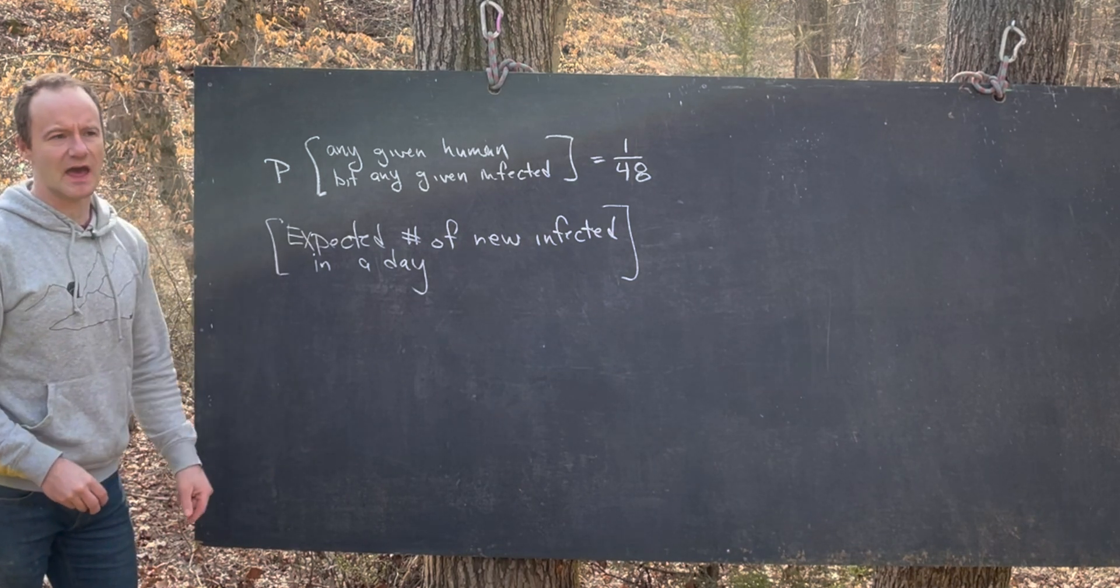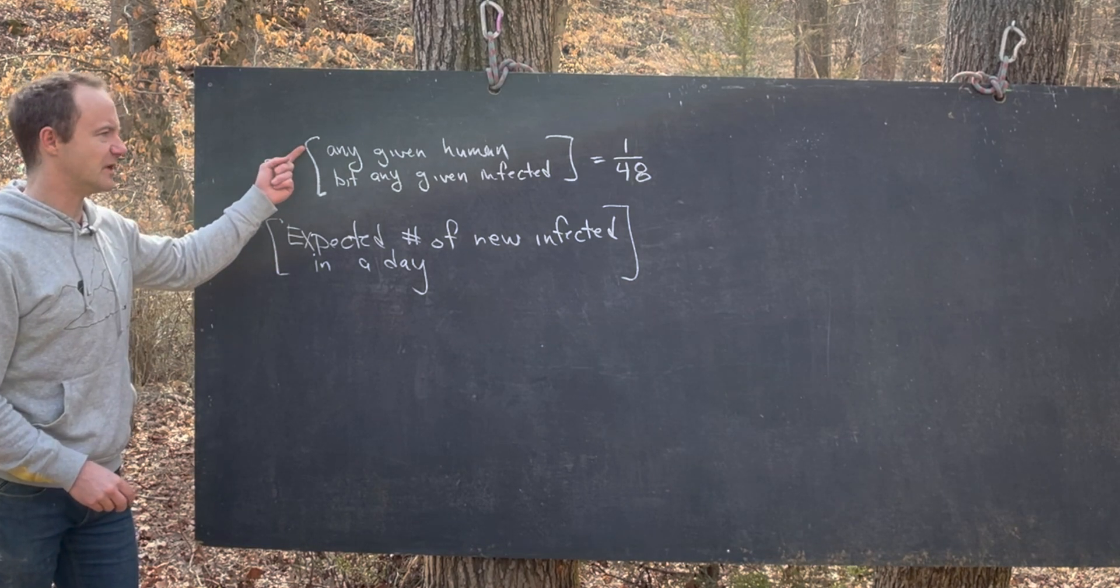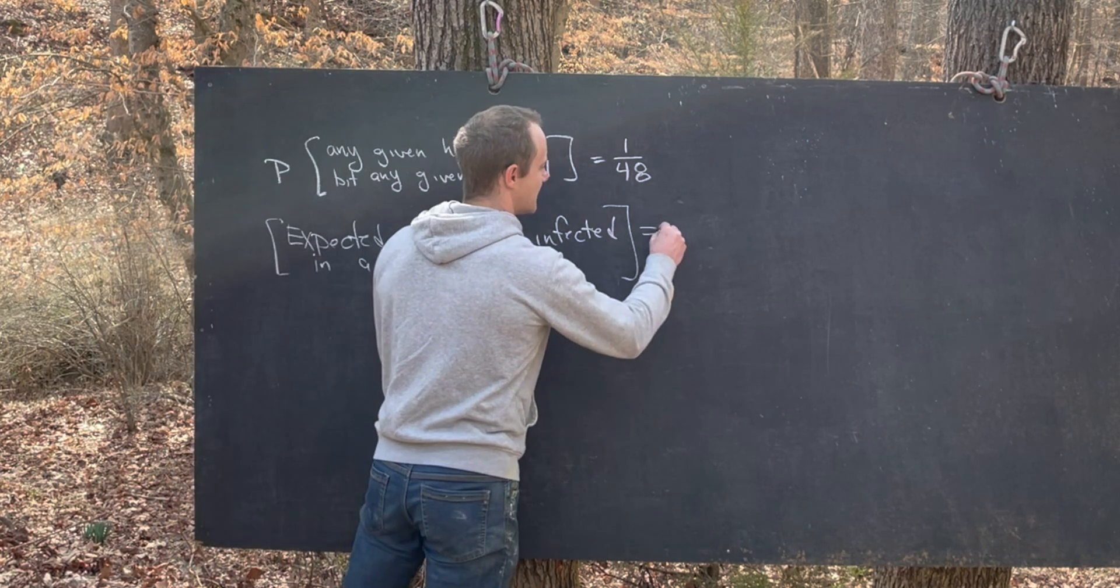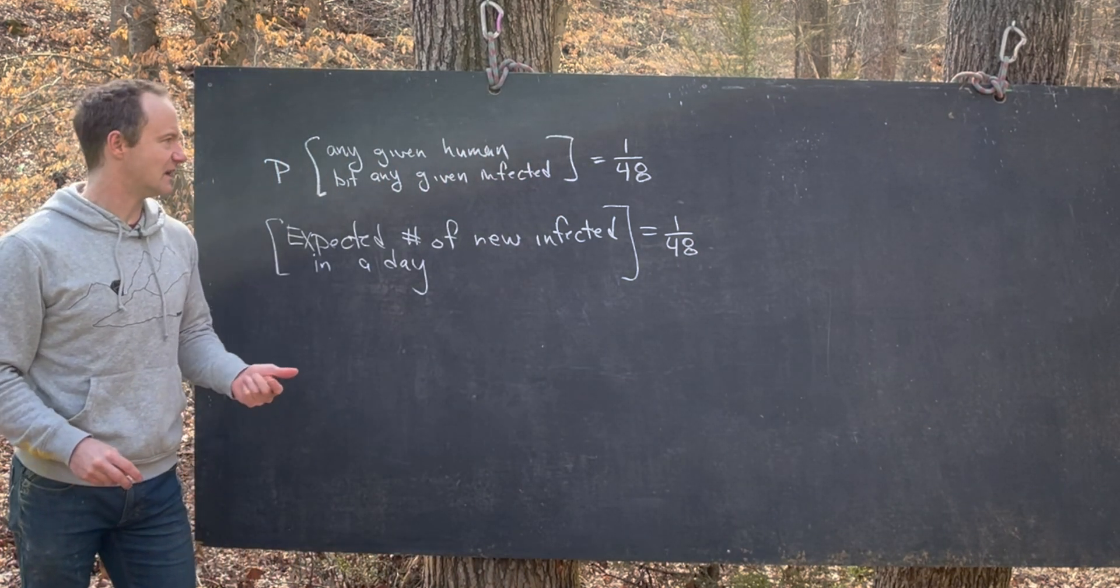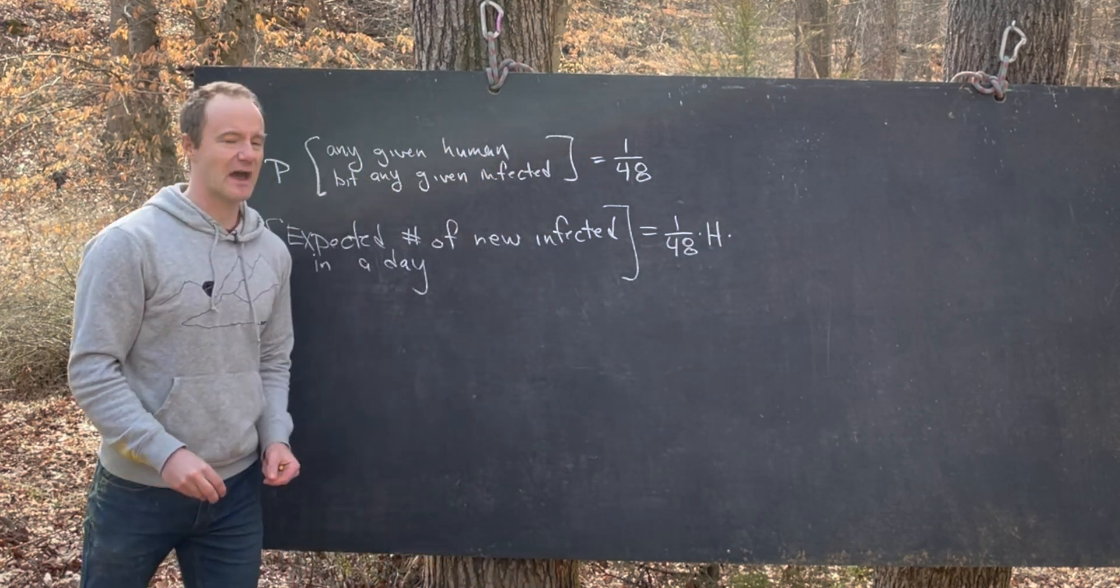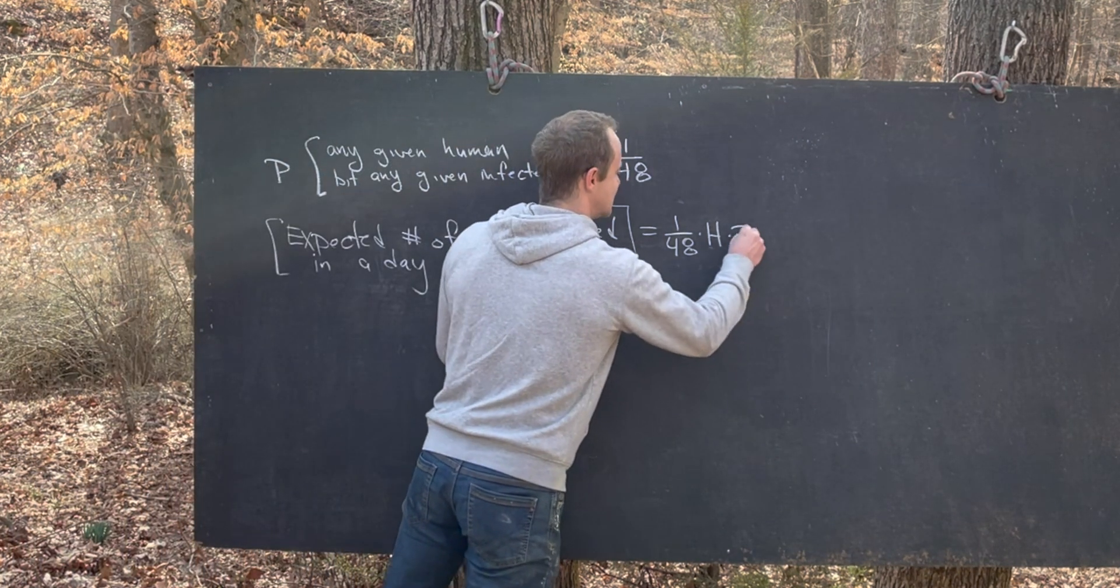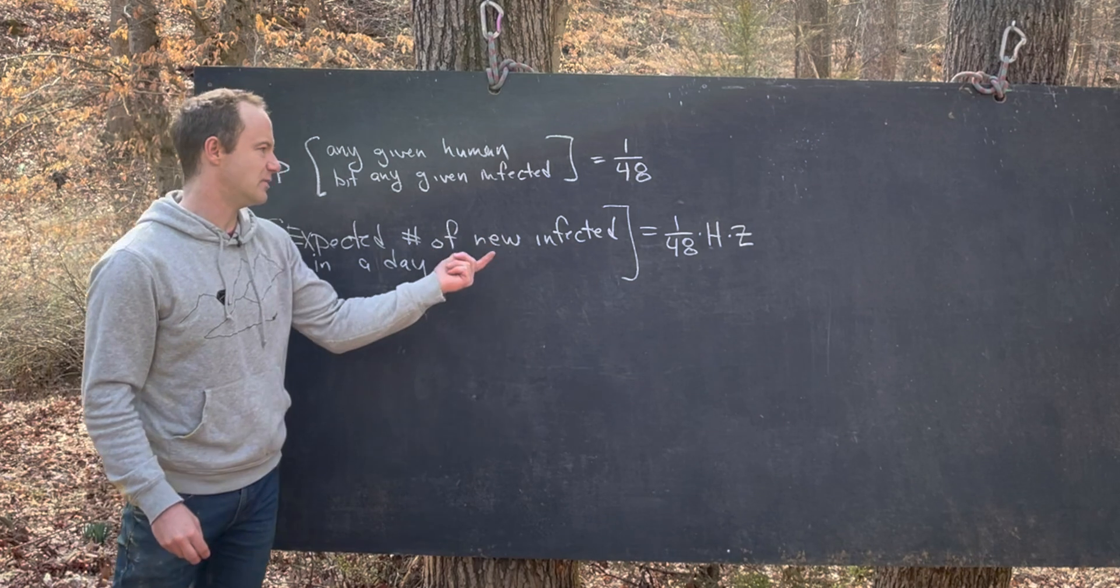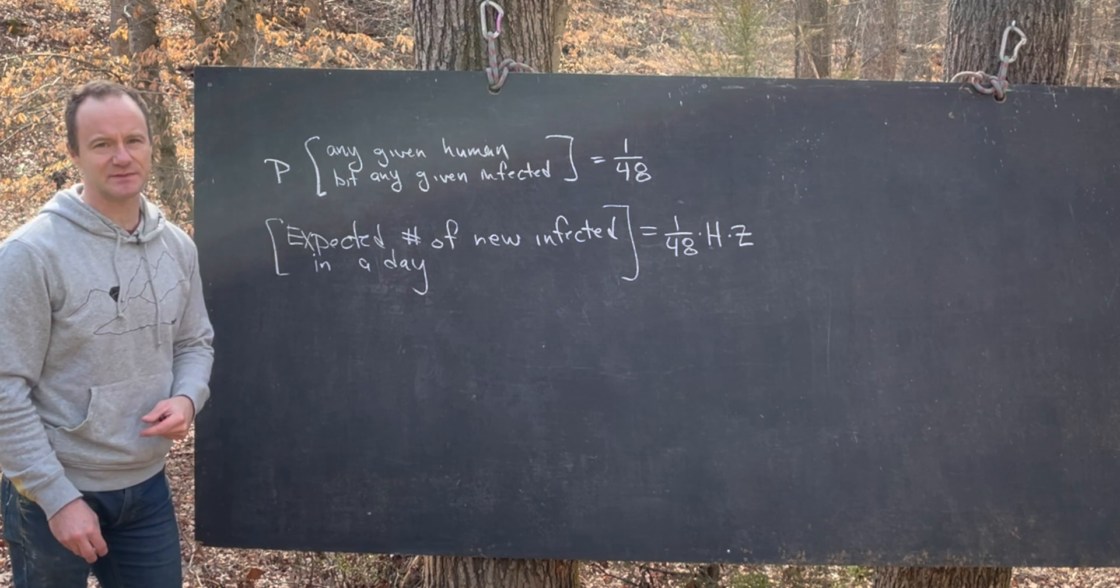So now let's use that to see the expected number of new infected in a day. Assuming that this probability is for each day. Okay, so how might we do that? Well, notice it's going to be the probability that any given human or any fixed human gets bit by any fixed infected. So we'll start with that. And then we have to multiply that by the number of non-infected, the number of humans. So I'll call that H. And then we also have to multiply that by the number of infected. So I'll call that Z. So that means the expected number of new infected people in a day can be maybe generally modeled as 1 over 48 times H times Z.